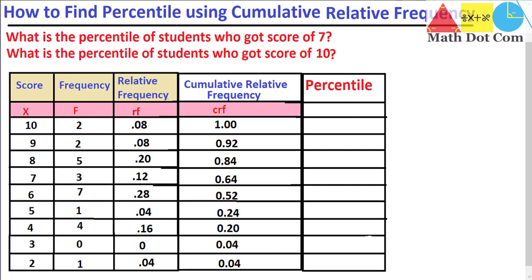Here we have a table where I have already written the score and frequency, including the relative frequency and cumulative relative frequency. I have already made a lecture on the relative frequency and cumulative relative frequency. You can see the link to those videos at the top and at the end of this video, so that you can understand how to find the relative and cumulative relative frequency.